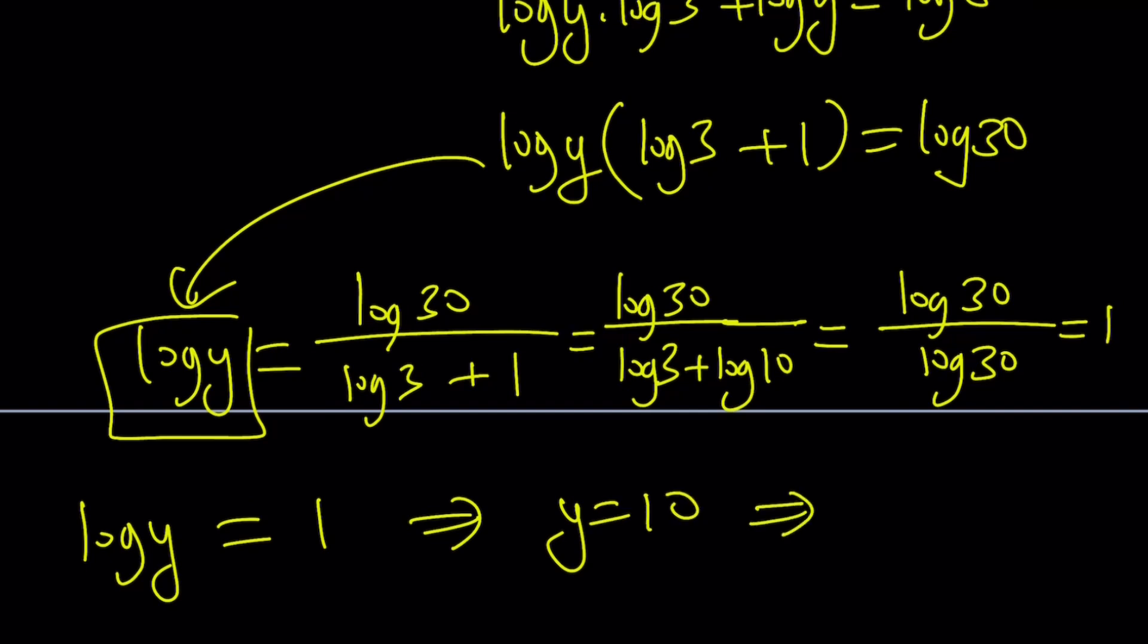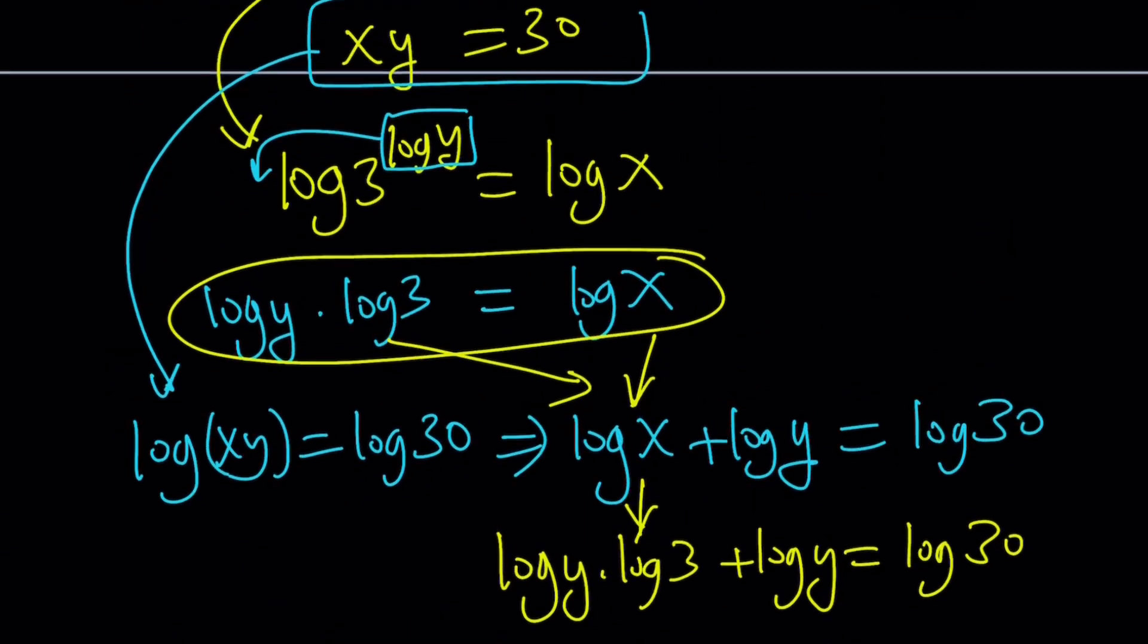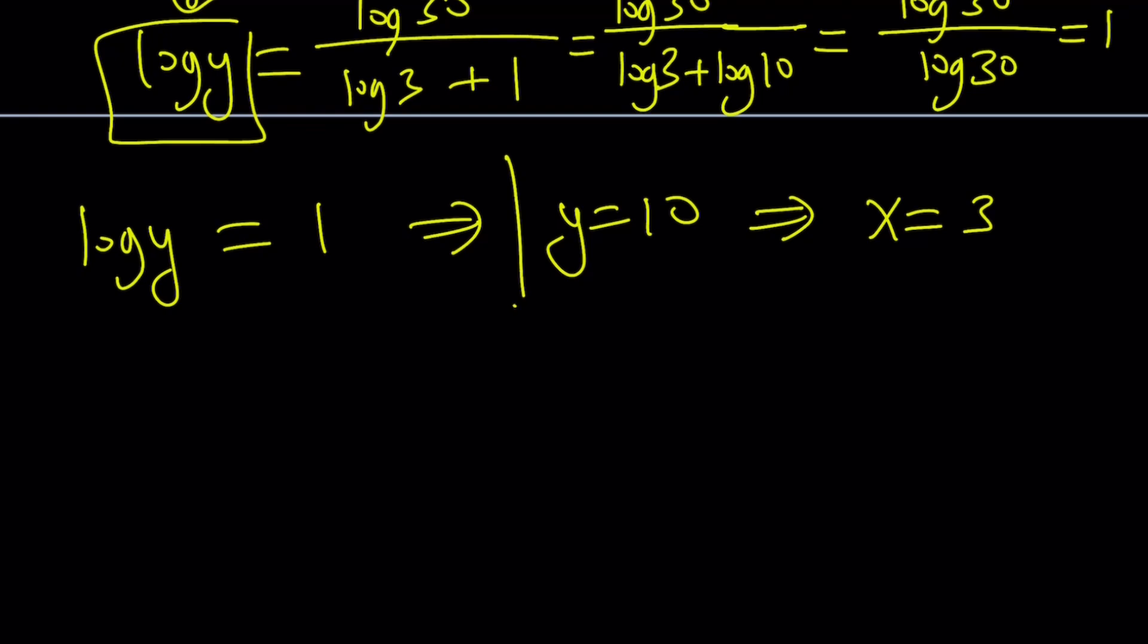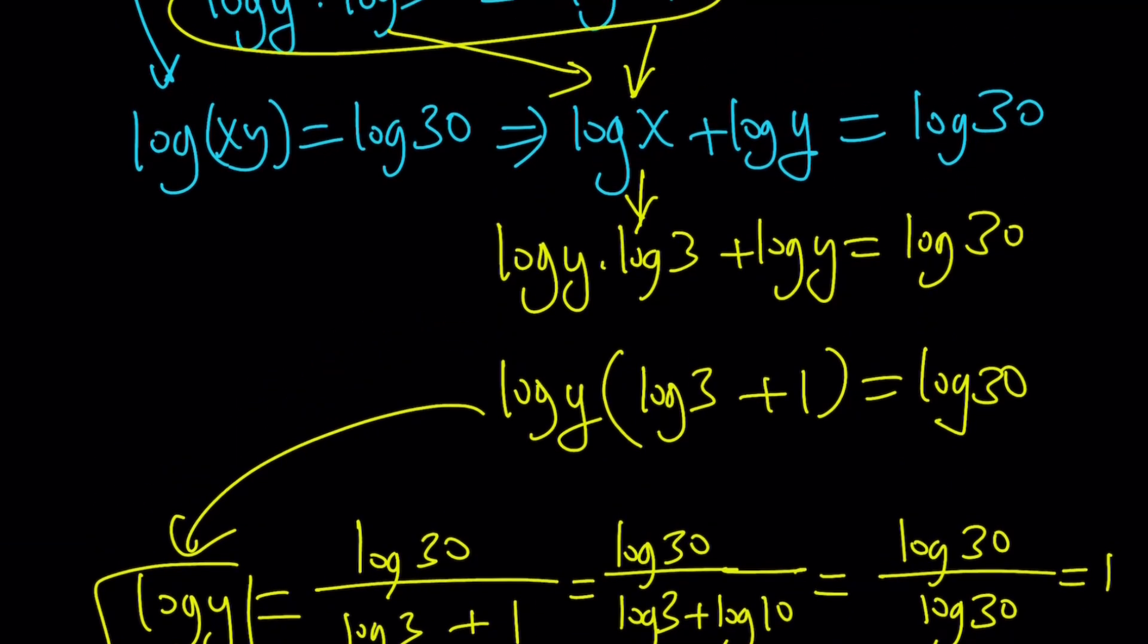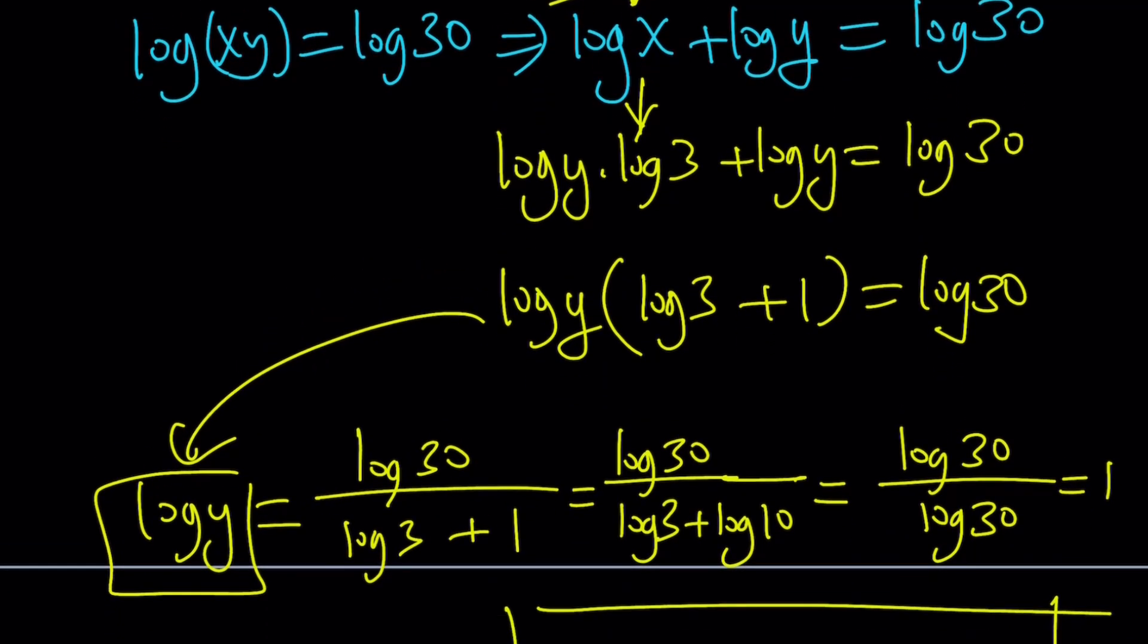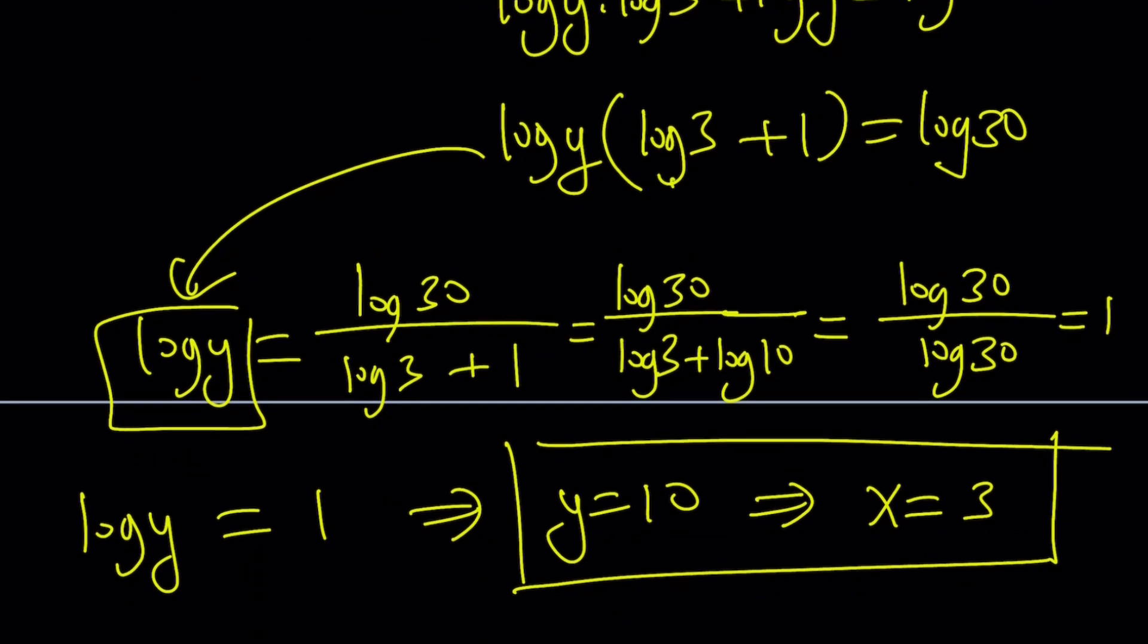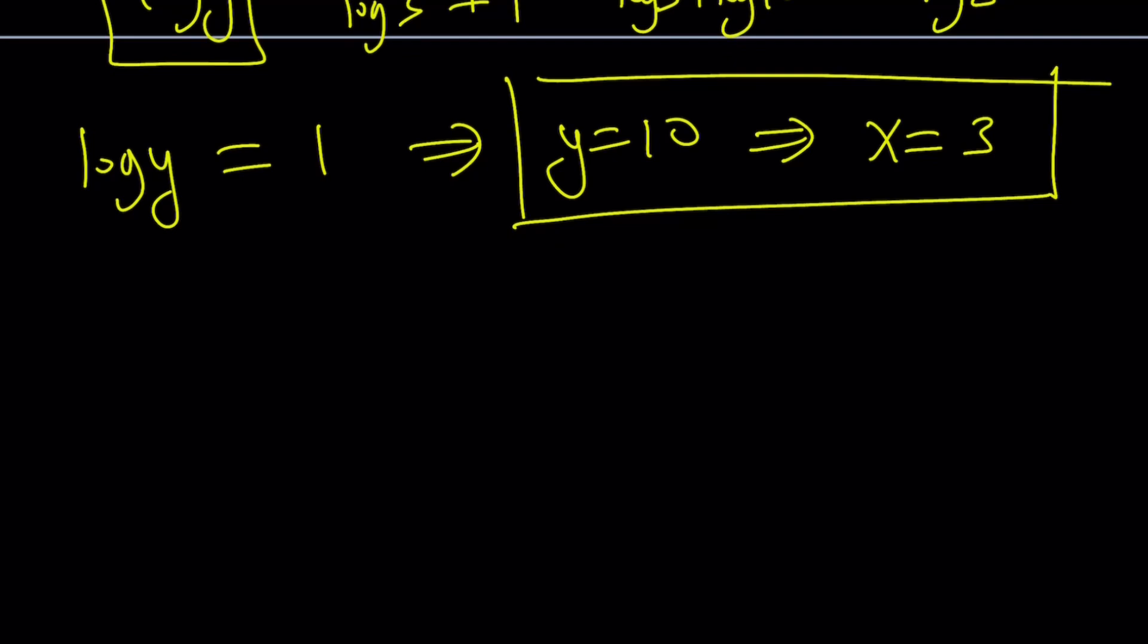If y is equal to 10, then x is equal to 3 because x times y equals 30. So, we get the same solution from here, 3 comma 10 using the second method. Second method is logging both sides of both equations and then going from there. By the way, you didn't really have to go into any of these if you realize that log 3 plus 1 is log 30. This is actually log 30, so log y must be 1. Anyways, there's a couple different ways to look at it. However you look at it, you're going to get the same answer.